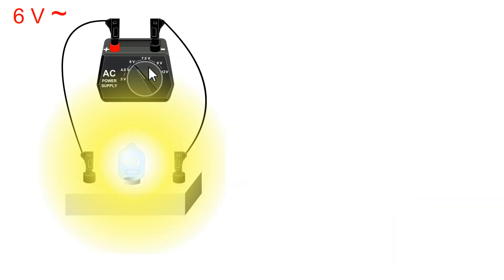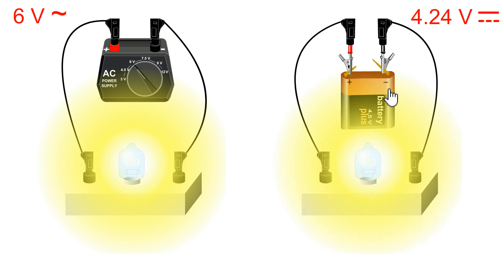Connect a bulb to 6 volts AC and observe its glow. Connect this bulb to a 4.24 volts DC battery. The shine is the same. Why? Whether the voltage is positive or negative, the bulb works the same.